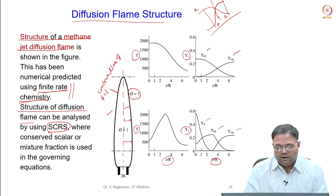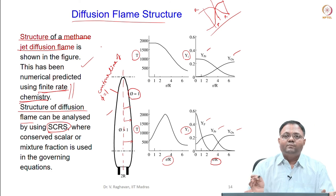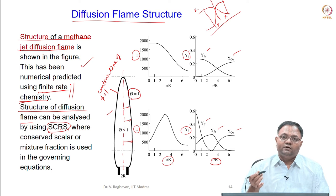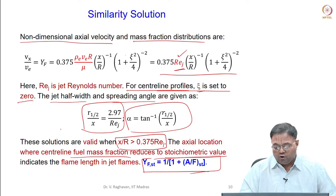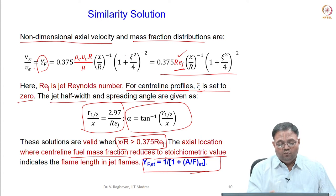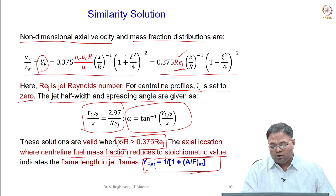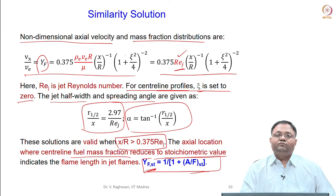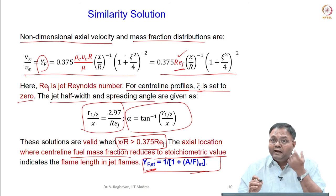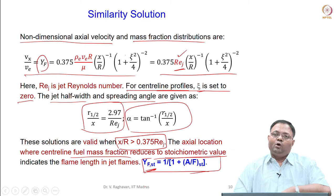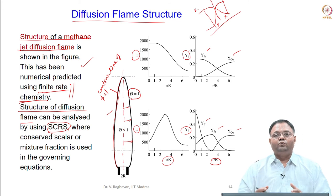The flame height and flame radius at every axial location are the flame extents we are interested in. We can use either finite rate chemistry prediction or the SCRS approach without chemistry. Using the non-reactive jet analysis, we can get the profile for YF. To find the flame height, we set psi=0 and find the location X where YF equals YF stoichiometric. Taking radial profiles of YF and getting radial locations where YF equals YF stoichiometric gives the phi=1 contour — so even from non-reactive analysis we can get this phi=1 contour.